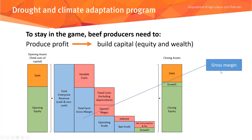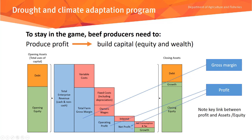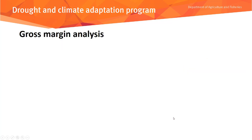We've introduced the term gross margin — revenue minus variable costs — along with operating profit and net profit terms. The key thing to note is the link between profit, what you produce above and beyond all costs you incur, and assets and equity. Profit contributes to the buffer you can use to cope with the variability of beef production in Northern Australia.